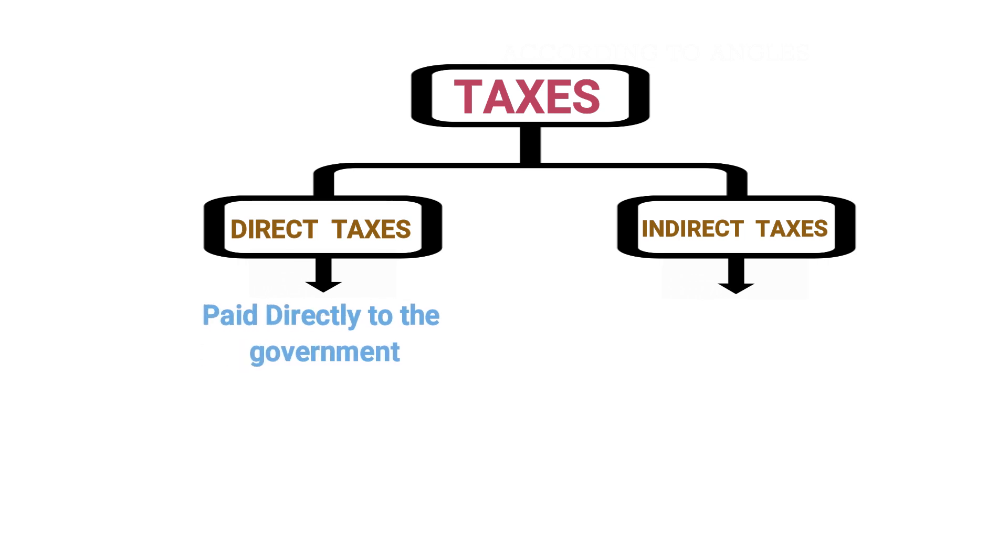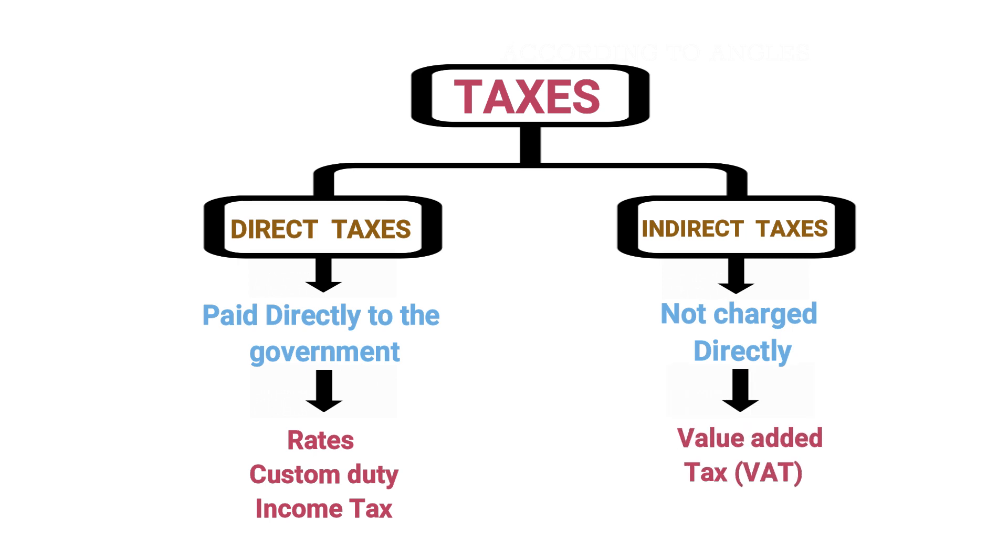Direct taxes are paid directly to the government, whereas indirect taxes are charged indirectly through a service provider or a trader. Rates, custom duty, and income tax are some examples for direct taxes. Value added tax or VAT is one of the best examples for indirect taxes. Now let's have a look at these types of taxes in detail.